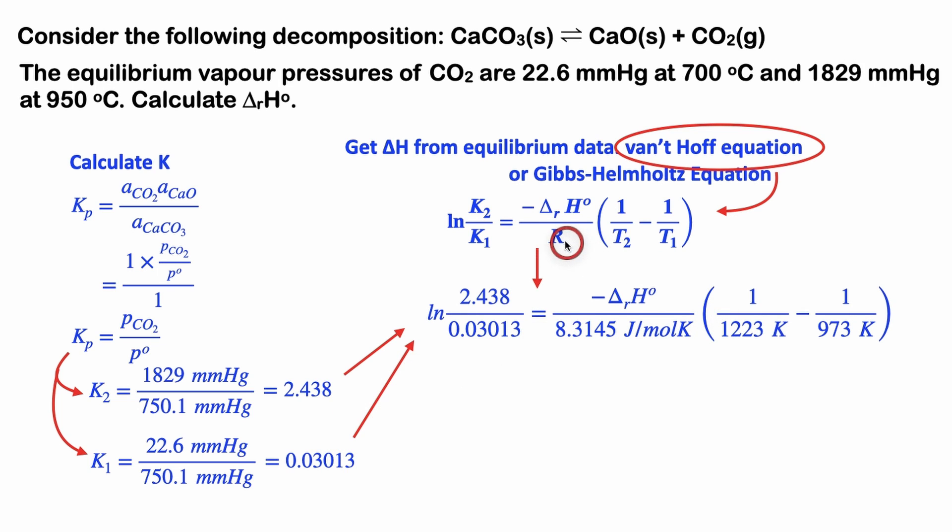Now that we have the equilibrium constants, we can plug them into our Van't Hoff equation. We want to choose the R that has joules in it, not units of pressure. You want units of joules, and we want temperature in Kelvin. If we do the algebra and solve for the change in standard enthalpy of the reaction, we get 1.74 × 10⁵ J/mol. Up to you if you want to convert this to kilojoules or not. And that's our answer.